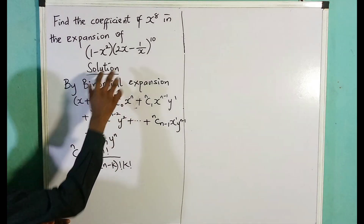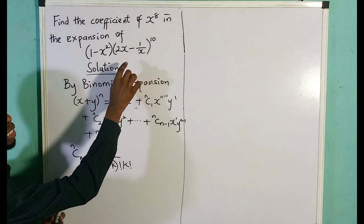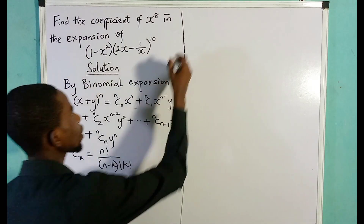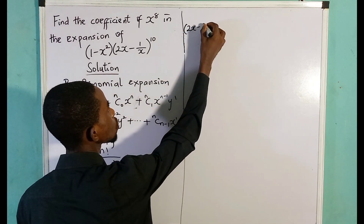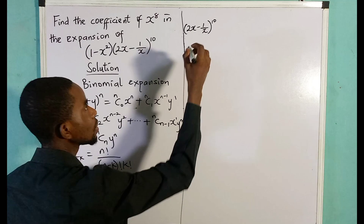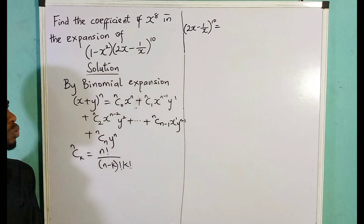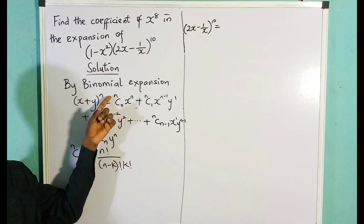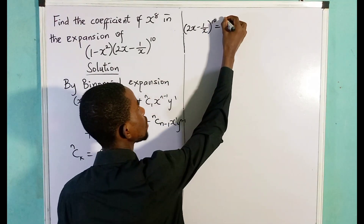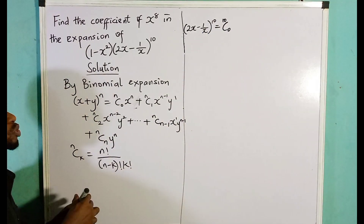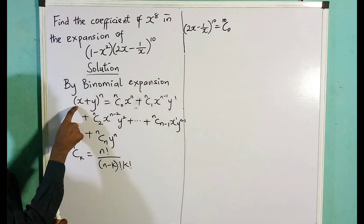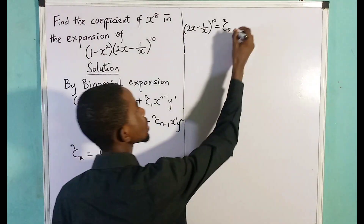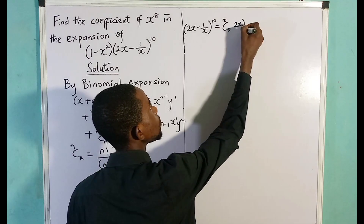We'll be using this knowledge to expand first, then multiply. Here we have (2x minus 1/x) to the power of 10. So we start with 10 combination 0. In this case, x is replaced by 2x, so it will be 2x raised to the power of 10.